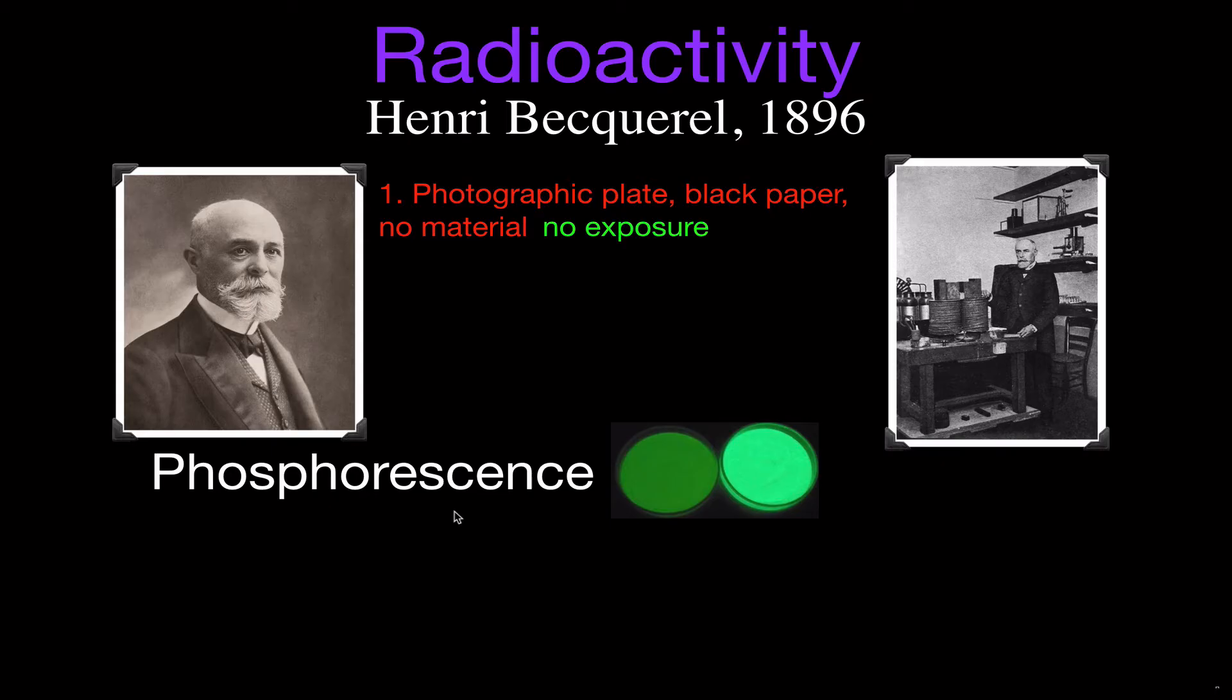So now he takes a piece of phosphorescent material, like zinc sulfite. Phosphorescence: you expose it to light, turn the lights off, it glows in the dark. He did that with a photographic plate covered in black paper. Phosphorescent material on the black paper, on the photographic plate. He leaves it outside for a while. That phosphorescent material absorbs sunlight, re-emits that light in the form of this narrow band of wavelengths.